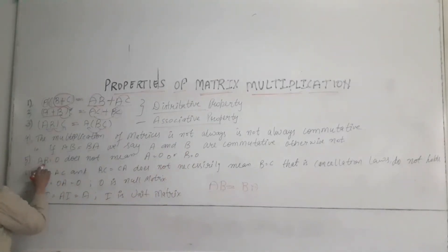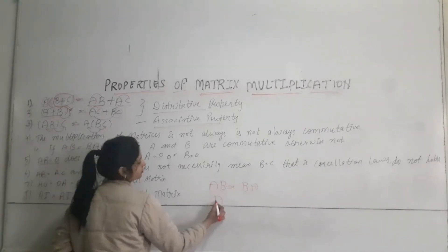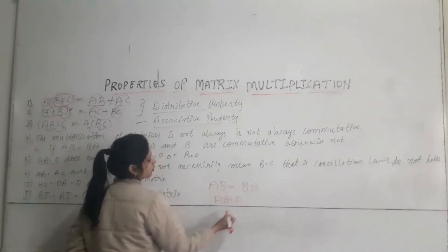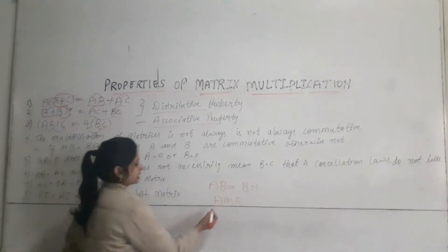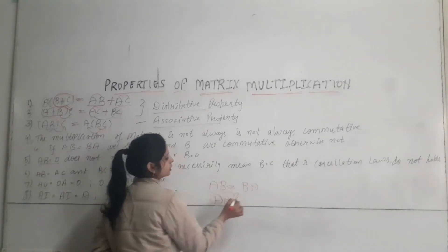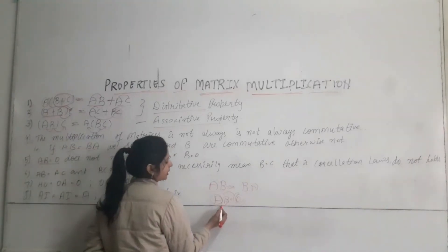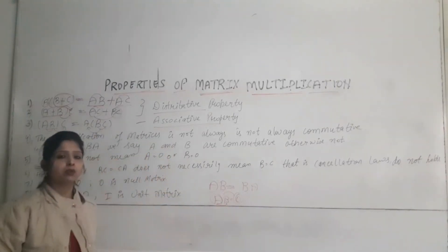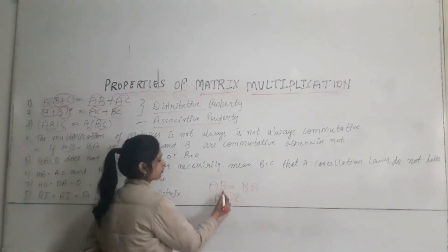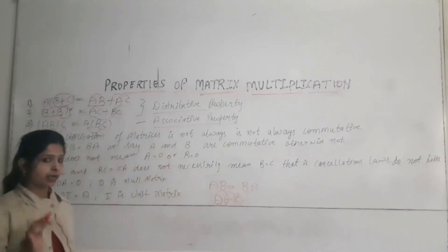The fifth property is: if AB is equal to the zero matrix, it doesn't mean A is equal to zero or B is equal to zero. Both A and B have to be the zero matrix for their product to be the zero matrix.